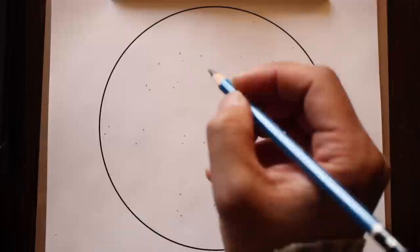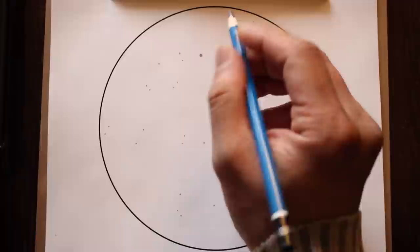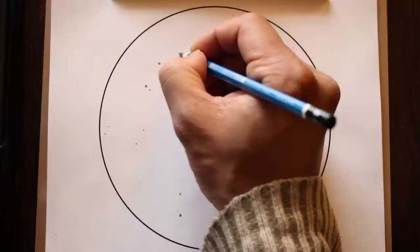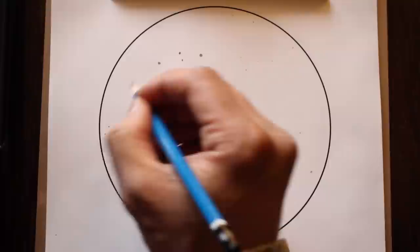Use an eraser if you make a mistake. M45 makes an easy target because you don't need to be in a dark sky site. The same is true for the brighter solar system objects such as the Moon, Saturn, and Jupiter. Make larger dots and use a darker shade to make the brighter stars pop.